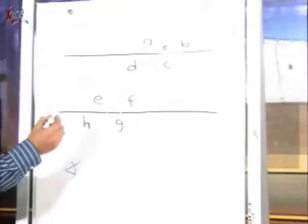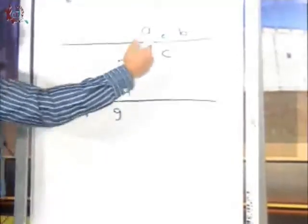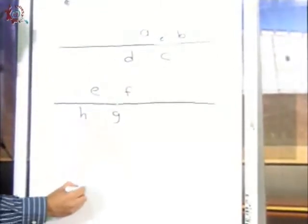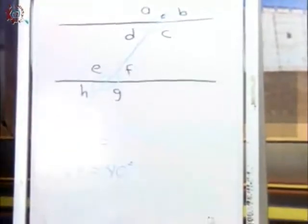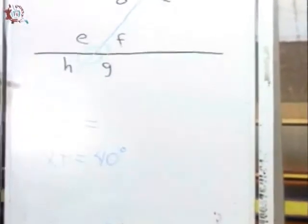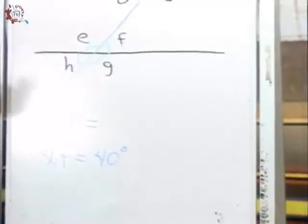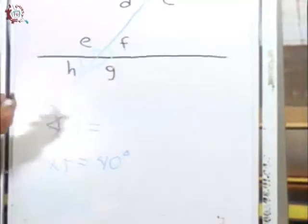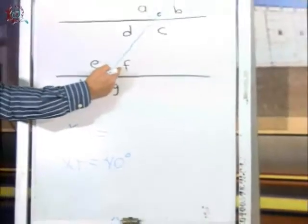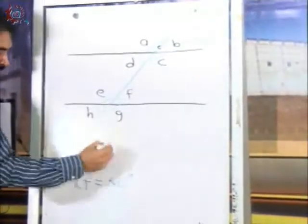¿Cuánto valdrá? El B es 40 grados. El E, ¿cuánto es? Si recordamos ángulos correspondientes son iguales. ¿Cuál es el correspondiente del B? El F. Entonces ángulo F mide 40 grados. Pero la pregunta es ¿cuánto mide el E? Como el ángulo F y el ángulo E son suplementarios, es decir que suman 180 grados, entonces podemos determinar mediante la diferencia. La diferencia es 140 grados. Esa es la medida del E.